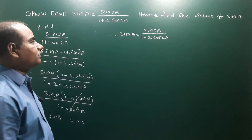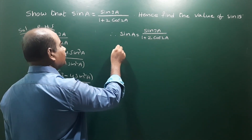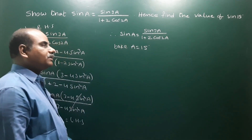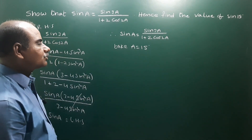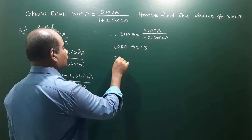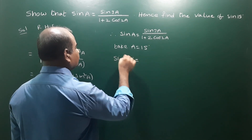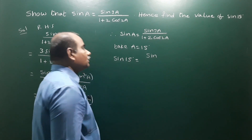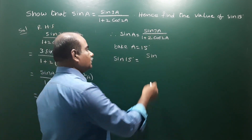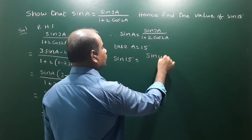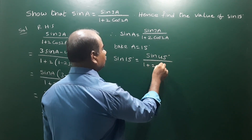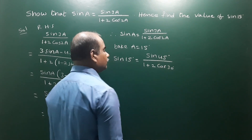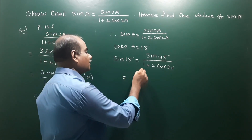Now we use this result to find the value of sin 15 degrees. Take a equal to 15 degrees. Then sin 15 equals sin(3 × 15) divided by 1 plus 2 cos(2 × 15), which is sin 45 degrees divided by 1 plus 2 cos 30 degrees.